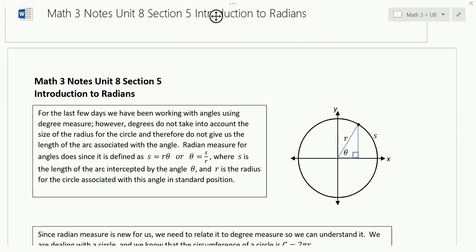For the last few days, we've been working with angles using degree measure. However, degrees do not take into account the size of the radius of the circle, and therefore do not give us the length of the arc associated with the angle. You may remember in math 2 — it's been a while, I know — finding arc length.